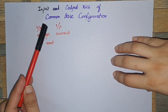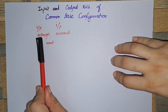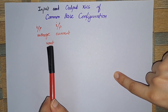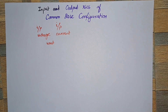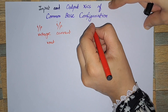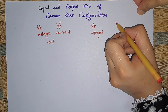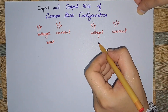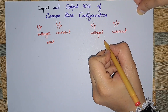So in which region it should be operated so that you can get your desired results. When we talk about the input characteristic curves, these are actually the plot between the input voltages and the input current for the different values of output voltages, or V_out. Similarly, the output characteristic curves are the plot between the output voltages and output current for the different values of input current.